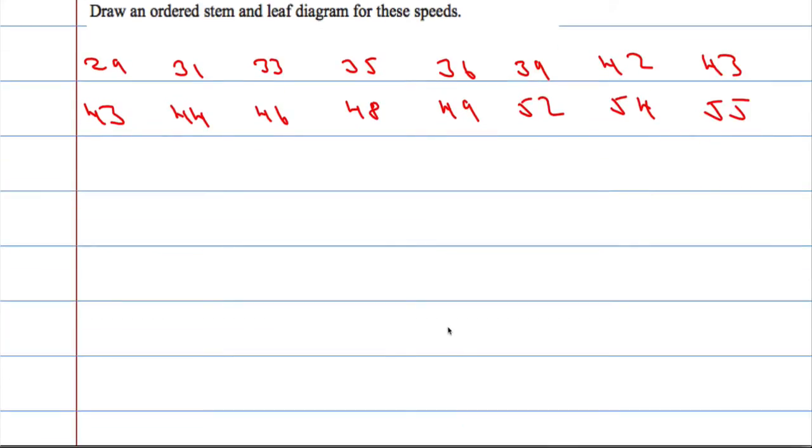We've got to draw an ordered stem and leaf diagram. So let's start out with a key. And we can say something like this: 3, 6 means 36 miles per hour.